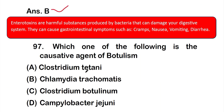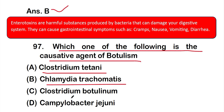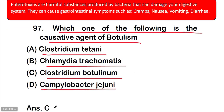Question number 97: Which one of the following is the causative agent of botulism? Option A: Clostridium tetani, option B: Chlamydia trachomatis, option C: Clostridium botulinum, option D: Campylobacter jejuni. The correct answer is option C — Clostridium botulinum. Botulism is caused by the microorganism Clostridium botulinum.